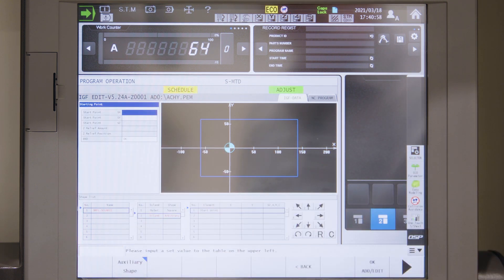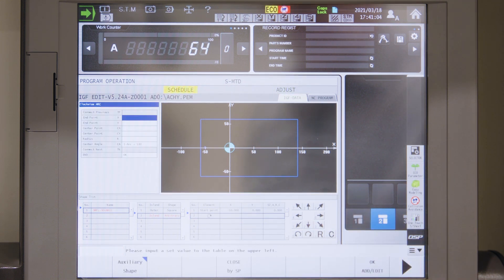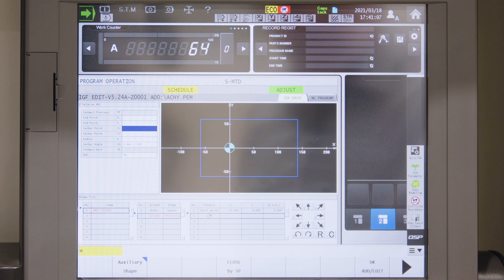The island is a free shape. This shape has a starting point at minus 50 and zero. From there I will go in a circular motion to an unknown endpoint with a center point of zero zero and radius of 50. An arc smaller than 180 degrees.